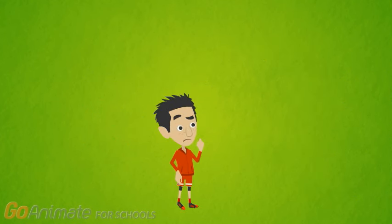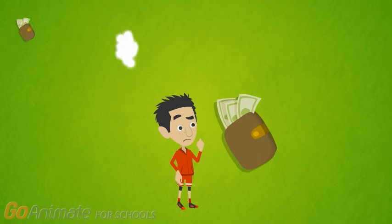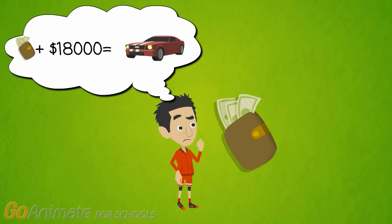Billy checks his pockets. I only have $2,000. I still need another $18,000 to buy the car. Where will I find that much money?